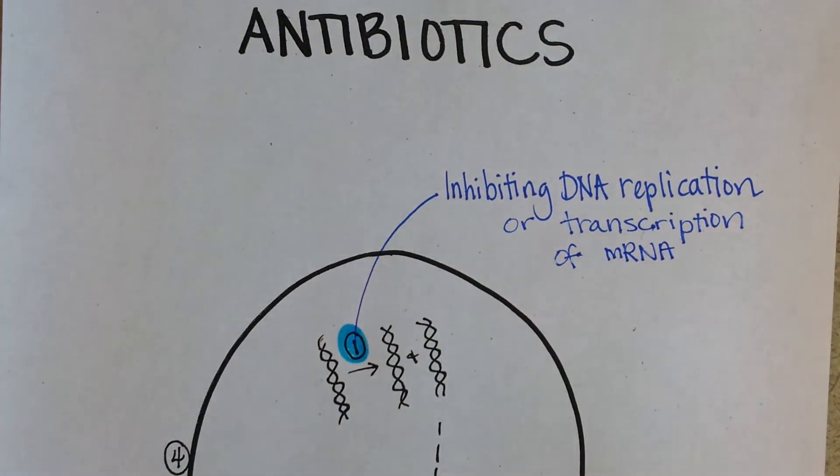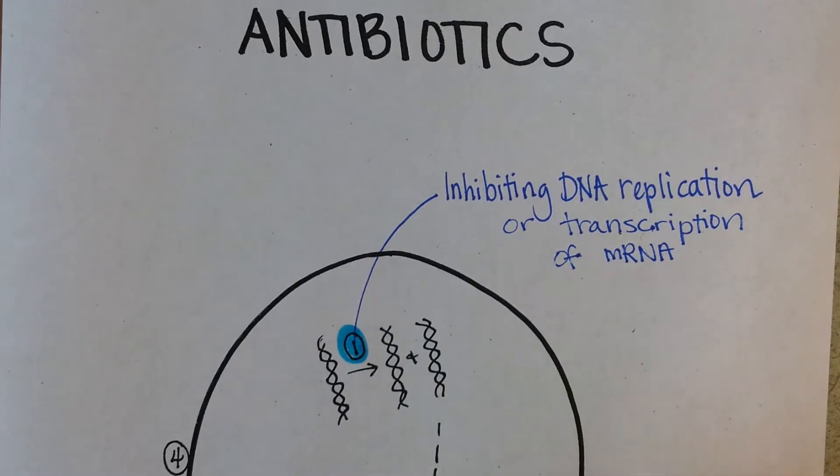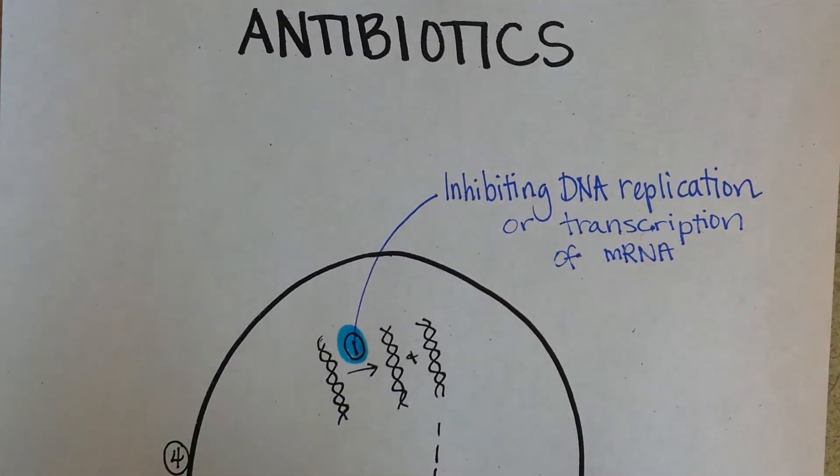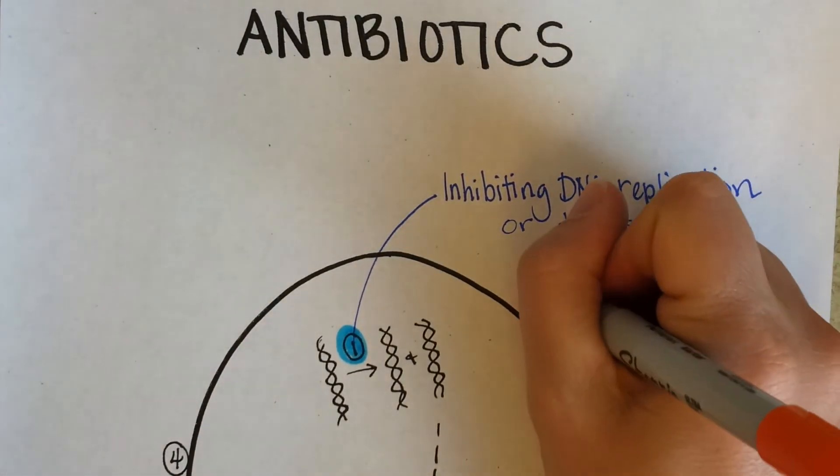So that's one way the antibiotics can work. They're going to stop the bacterial cell from being able to replicate its own DNA so it's not going to be able to divide into two cells, or they might stop it from transcribing its mRNA.